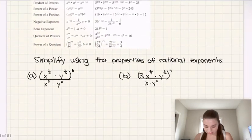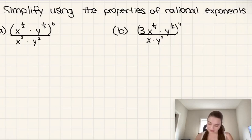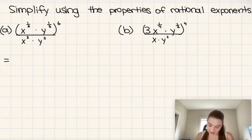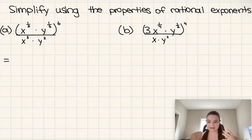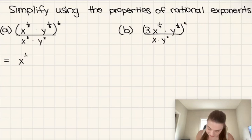So that was a quick review of those properties. Now let's go over how we can simplify expressions using them. For expression A, I notice that in the numerator we have x to the power of one-half times y to the power of one-third, and all of that is raised to the power of six. Using the power of a product property, this is the same as x to the power of one-half to the power of six, times y to the power of one-third to the power of six.